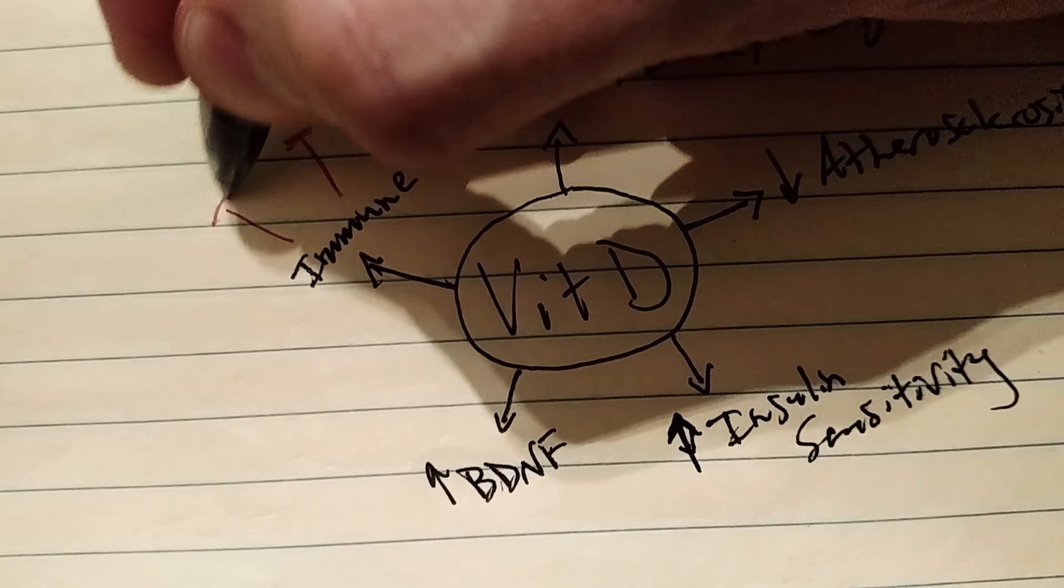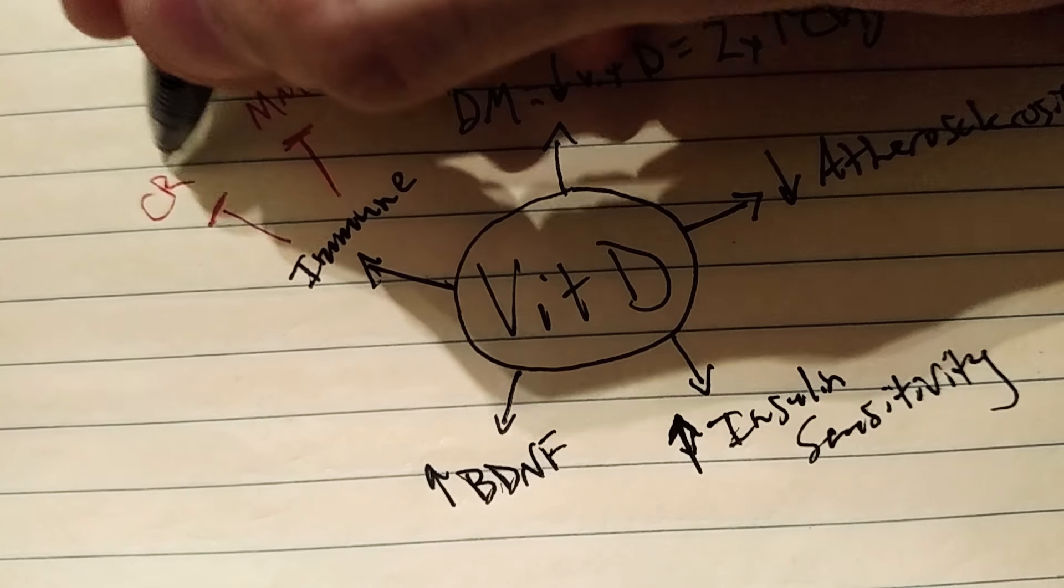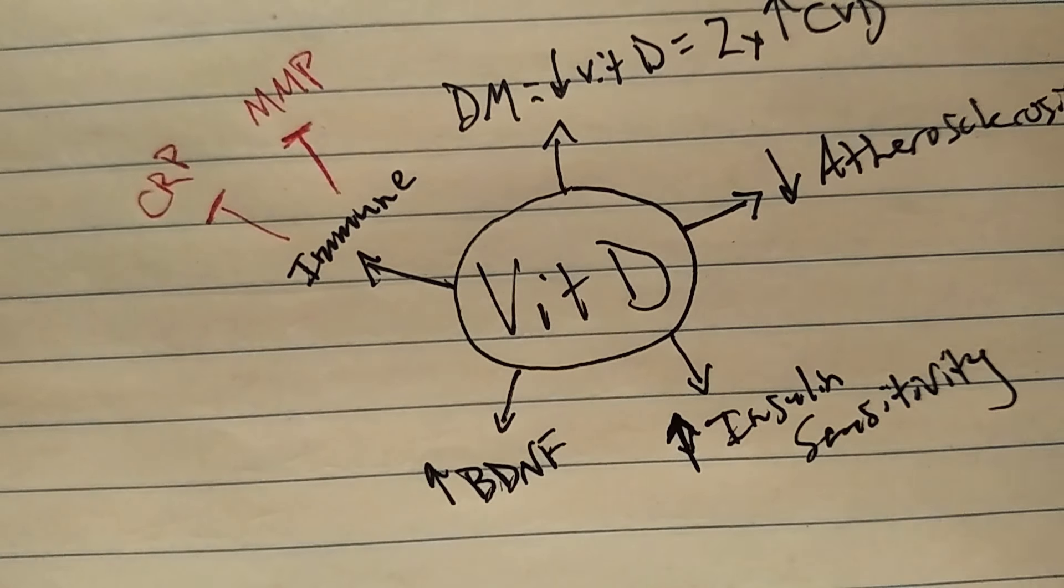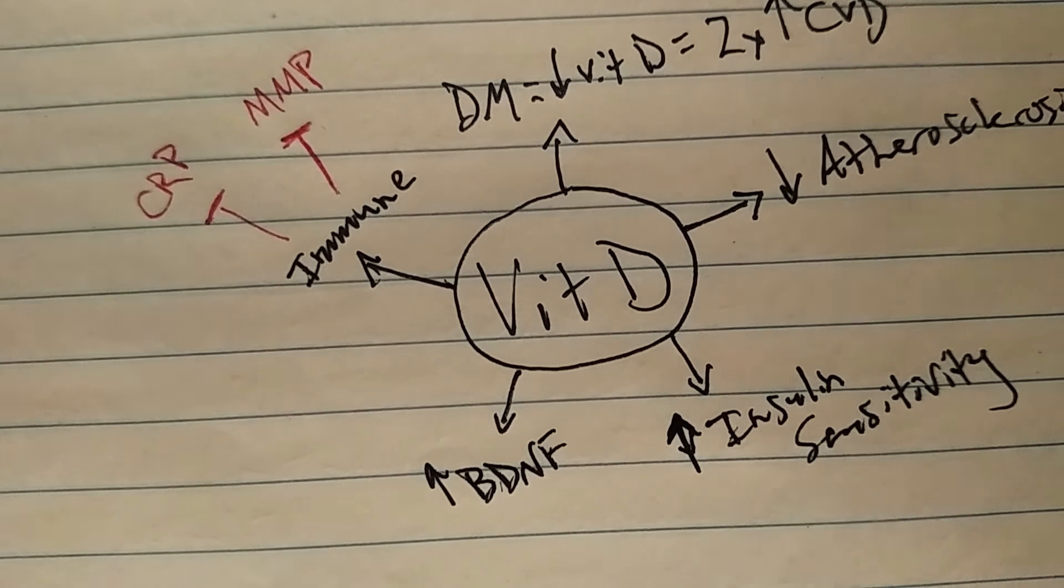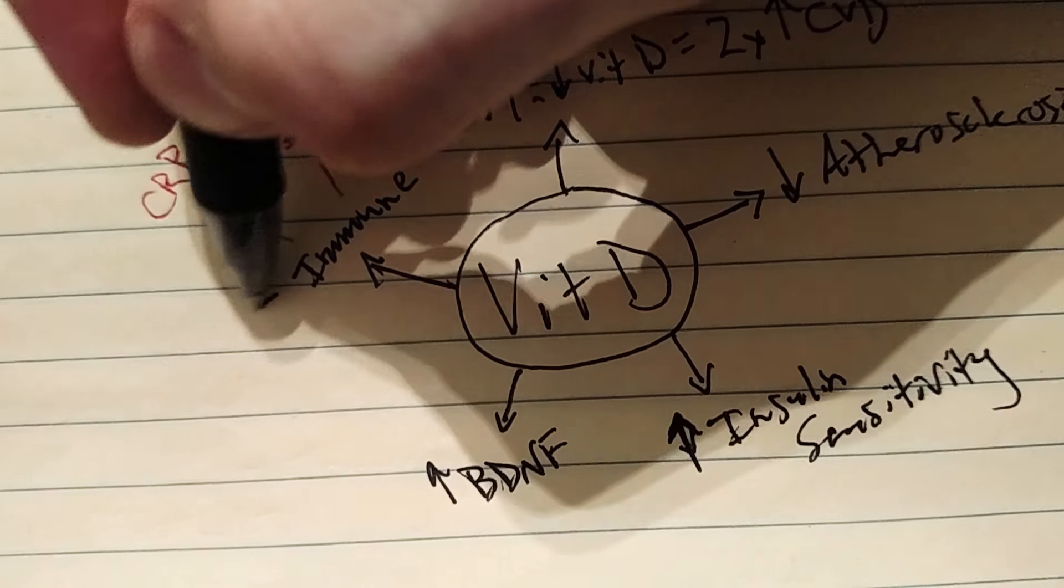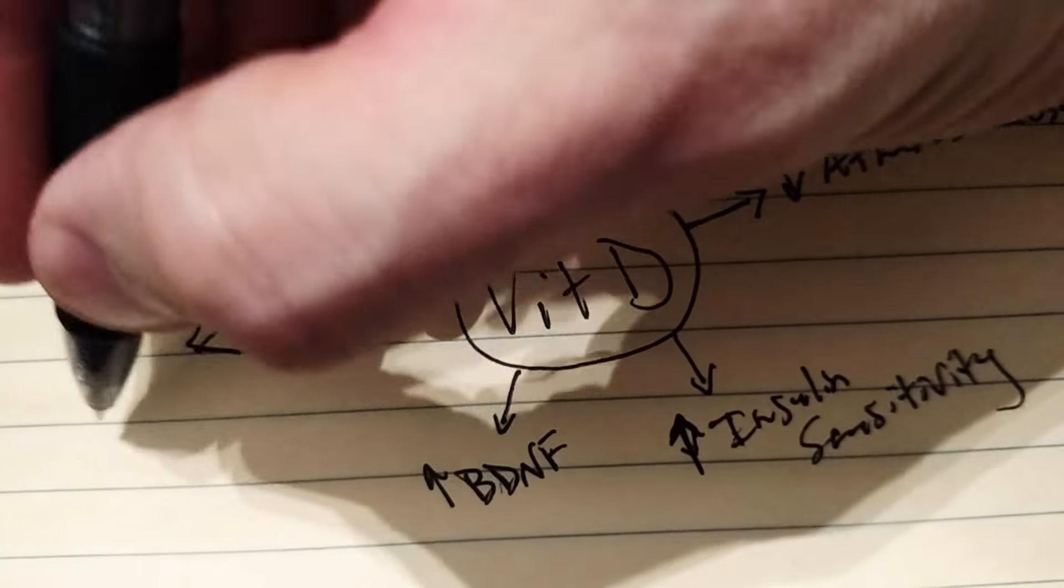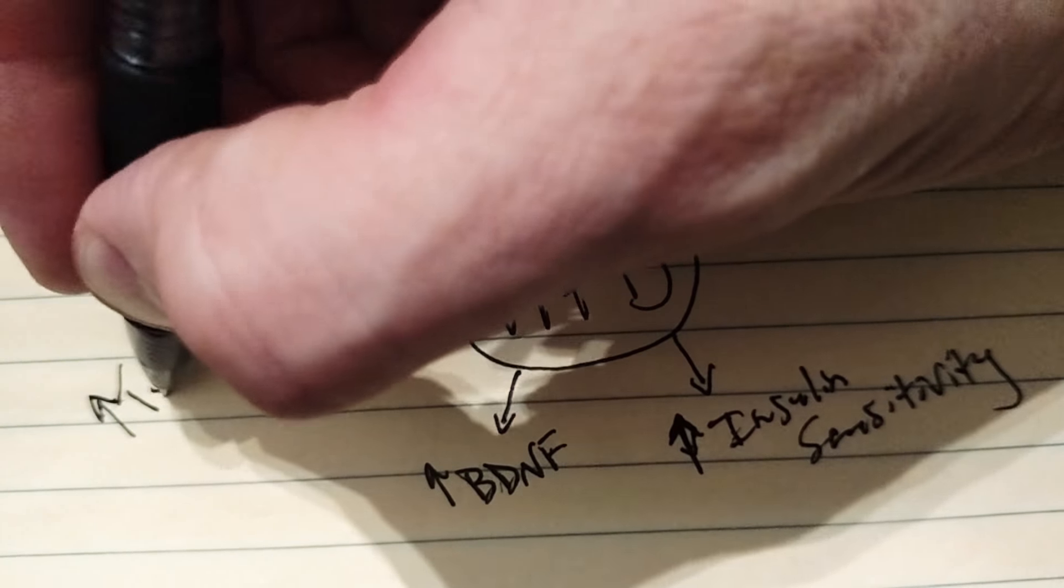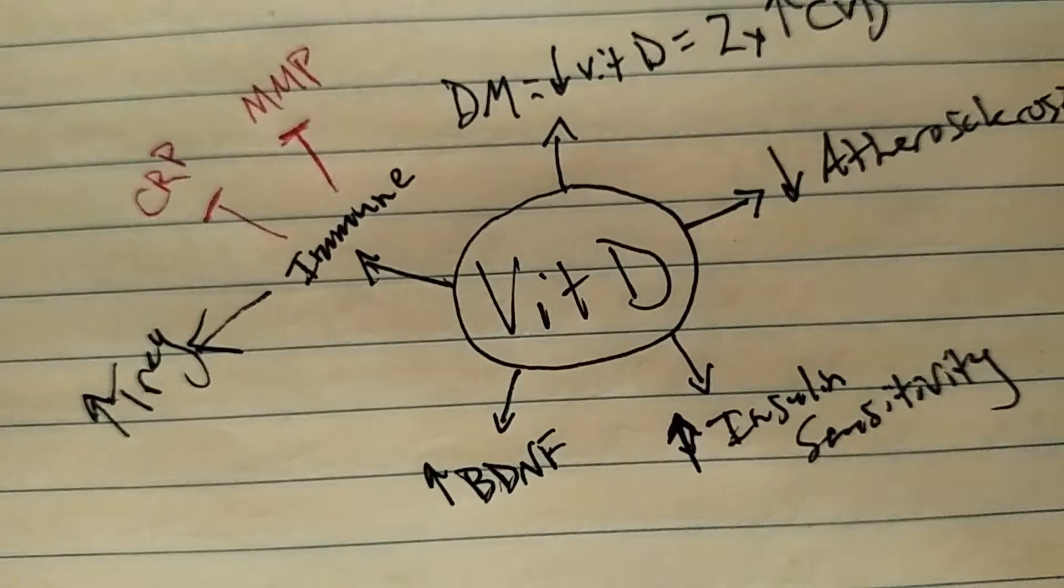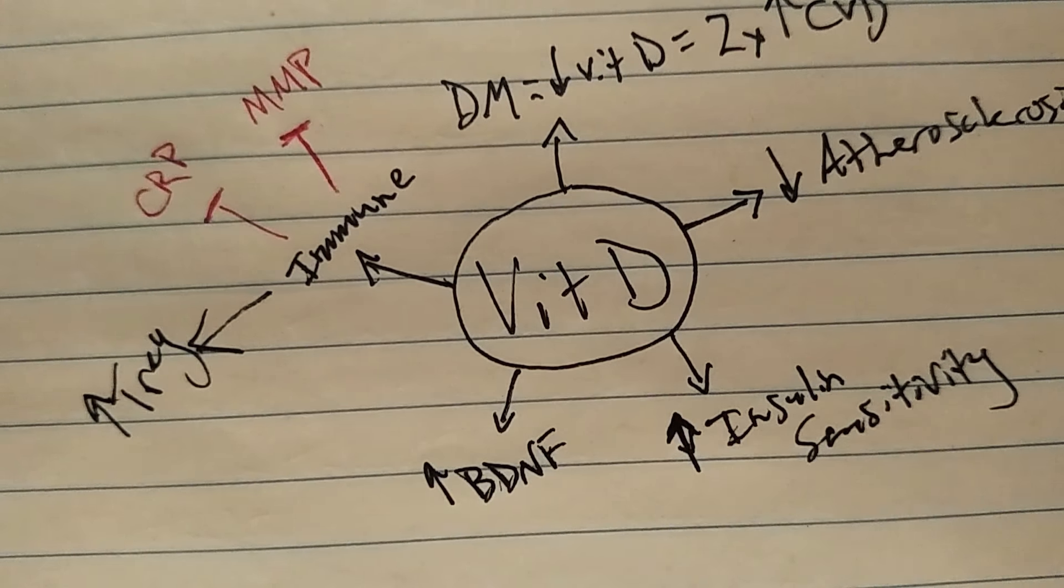Vitamin D also decreases C-reactive protein and other pro-inflammatory cytokines that are involved in causing damage and autoimmunity. Vitamin D also increases T-regulatory cells, which are the cells of the immune system that quiet things down and are anti-inflammatory.